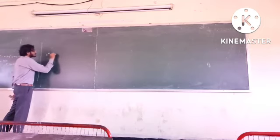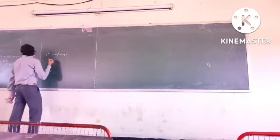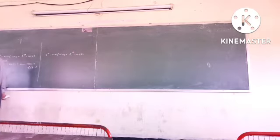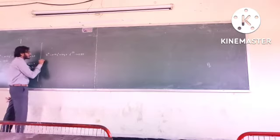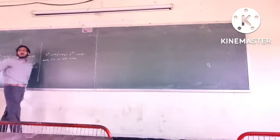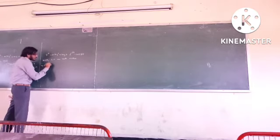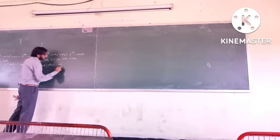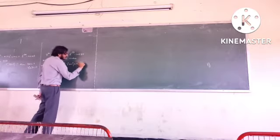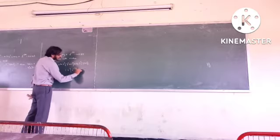Consider the problem: y dash of t minus 0.7 y dash plus 10y equal to e to the power minus 5t into cos(8t). We will apply the Laplace transform on both sides. Apply Laplace transform on both sides.